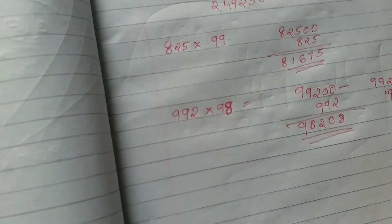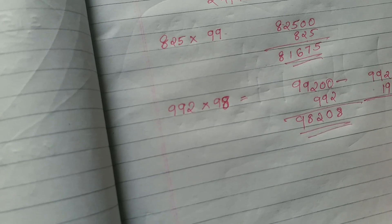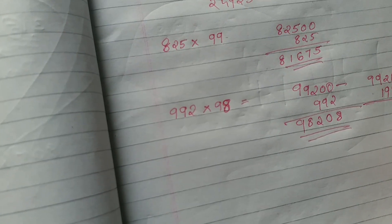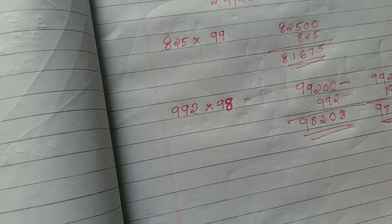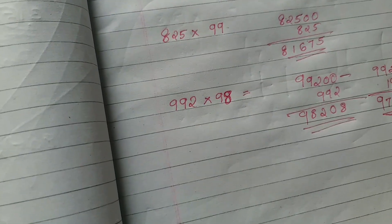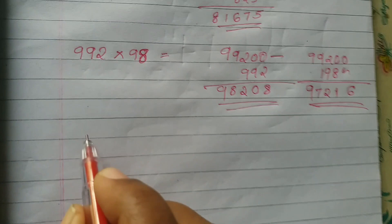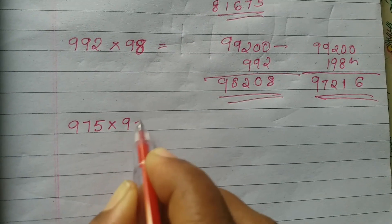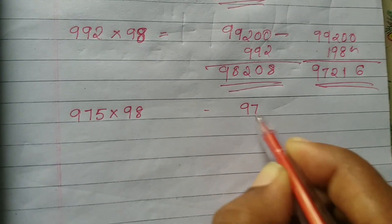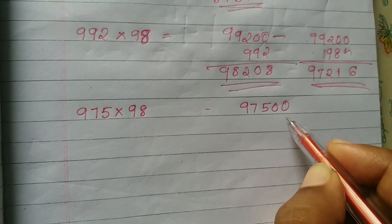This is 2x. We have to answer any questions. I will add 975 × 98, 975 × 2x.